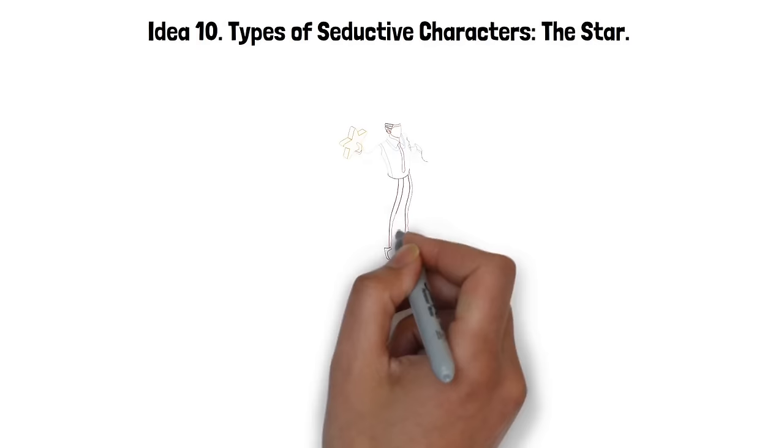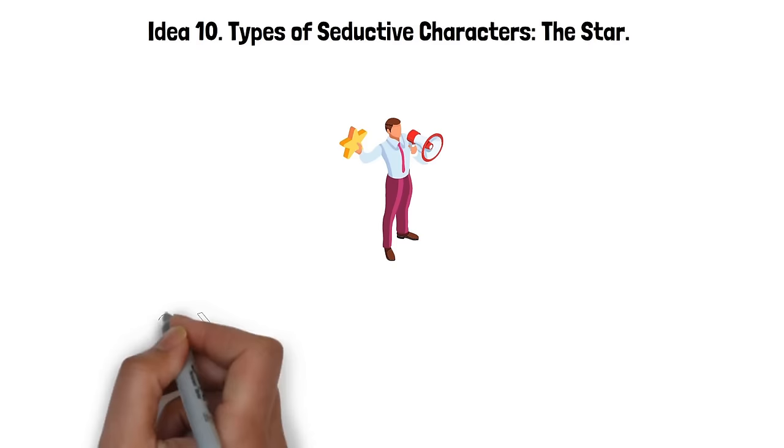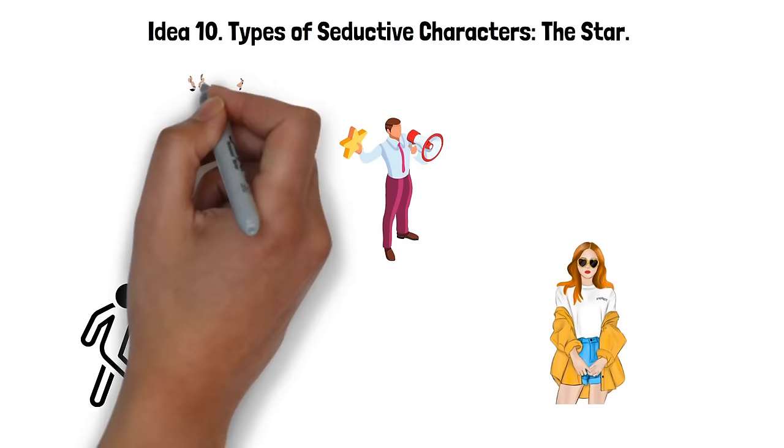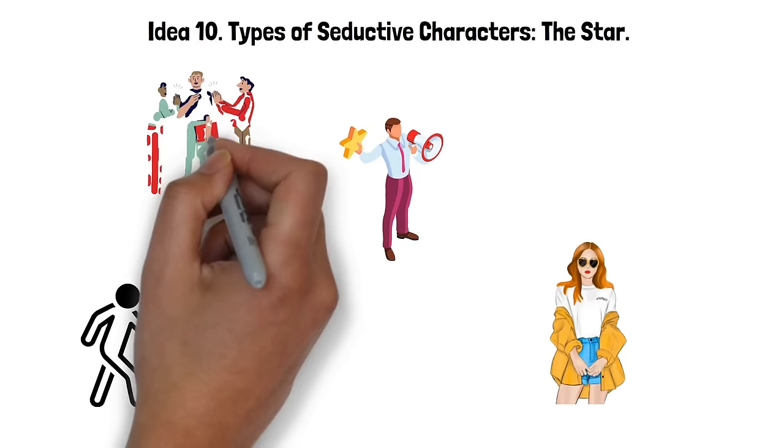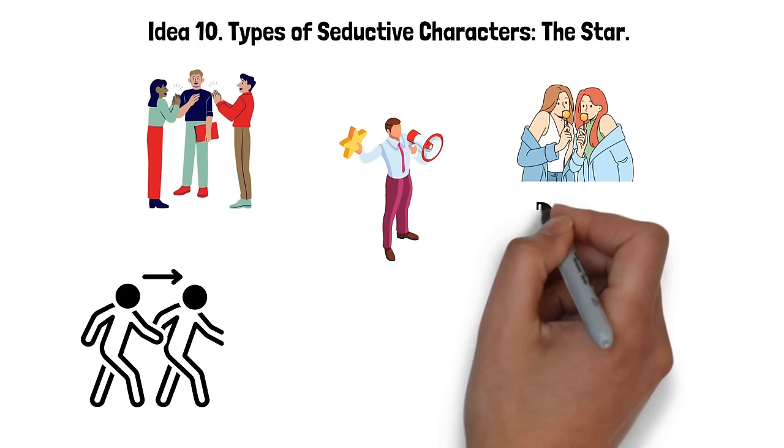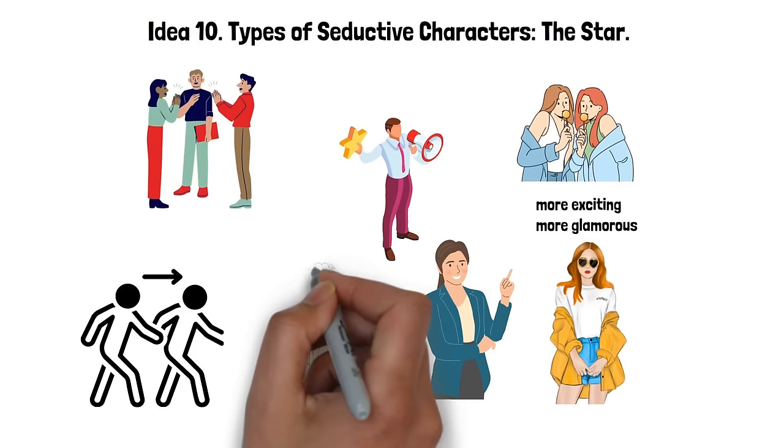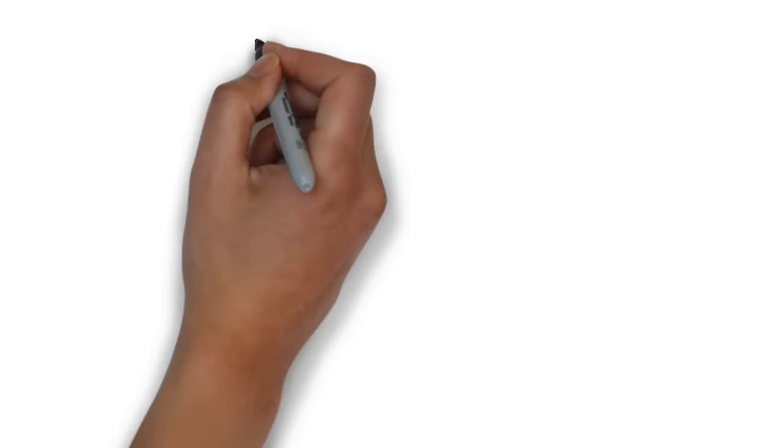Idea 10. Types of seductive characters. The star. A star is a seductive character who shines brightly, standing out from the crowd with their uniqueness. They possess an undeniable allure that people aspire to or are drawn towards. Stars are often distinguished by their glamour, their style, or their exceptional talent. They tend to captivate others with their radiant energy, charm, and a certain aura of superiority or exclusivity. What makes a star alluring is their ability to create a sense of awe and fascination. They present a world that seems more exciting, more glamorous than everyday life. Their ability to draw attention and keep it is their charm, and they often ignite others' dreams and aspirations through their own shining example.